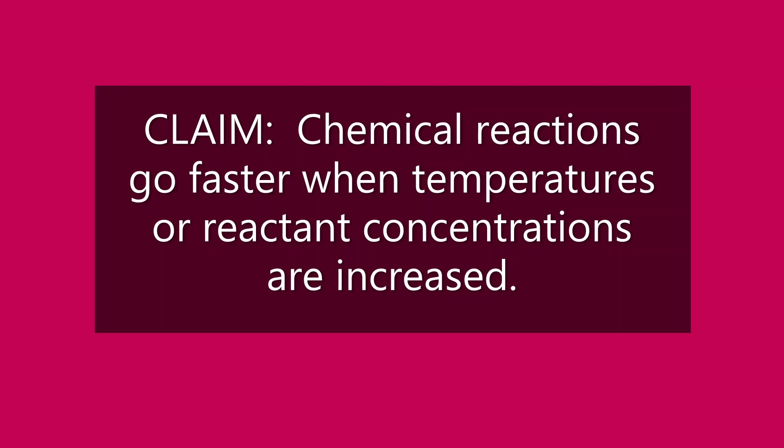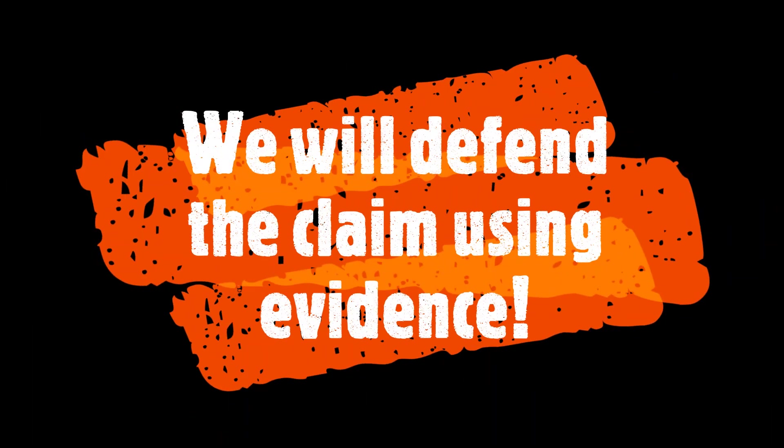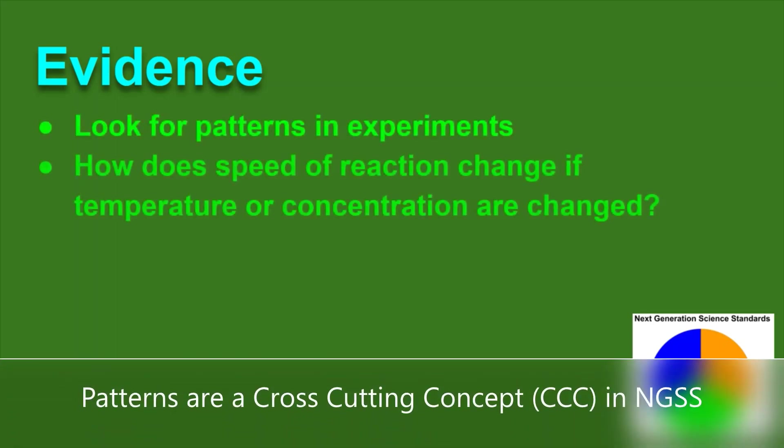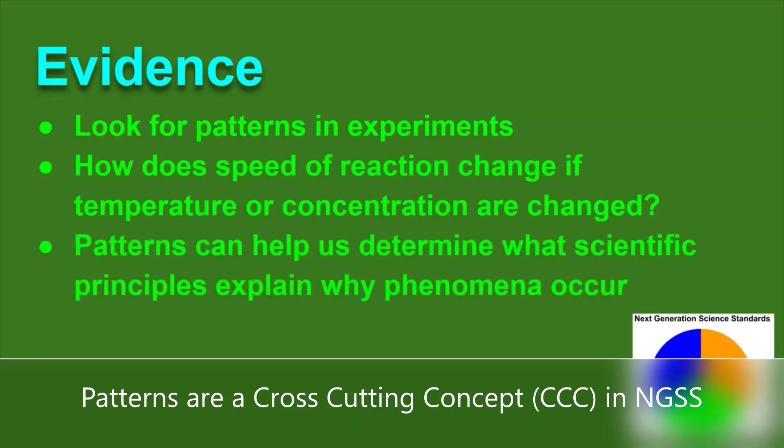Chemical reactions go faster when temperatures or reactant concentrations are increased. To defend this claim we'll start by identifying evidence that supports our claim. The evidence should show patterns of what happens to the speed of a reaction as the temperature changes or concentration of reactants are changed. By using patterns we can determine what underlying scientific principles cause a phenomena to occur.